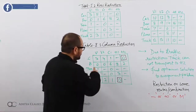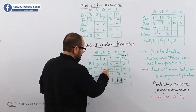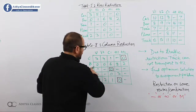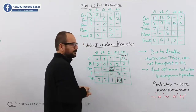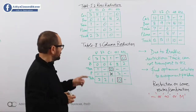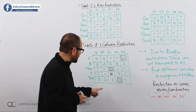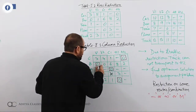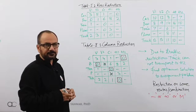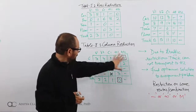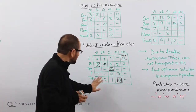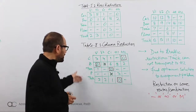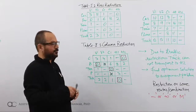We look for single zeros row by row. Finding a single zero in a row, we make an assignment and remove that zero. Then scanning columns, we find a single zero in a column and make another assignment. After completing all assignments, we have 4 assignments total.